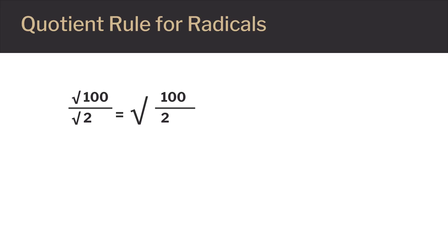Let's do another example. Say you have the square root of 100 divided by the square root of 2. You can rewrite that as the square root of 100 divided by 2. 100 divided by 2 equals 50, so you have the square root of 50. We need to make sure this is in simplest form. 50 is 25 times 2, and 25 is a perfect square. So we can rewrite this as the square root of 25 times 2, and the 5 can be brought out from underneath the radical, leaving 5 times the square root of 2.